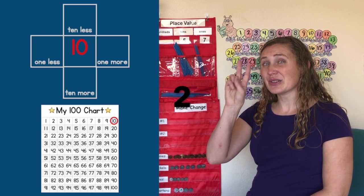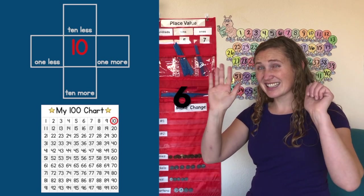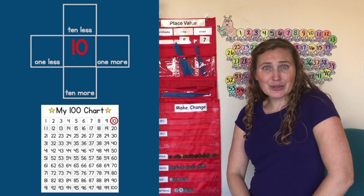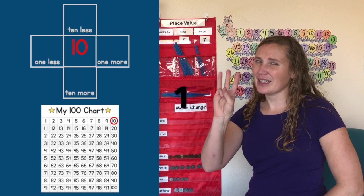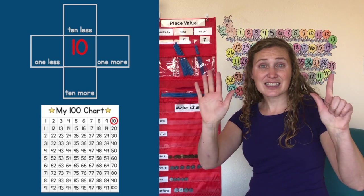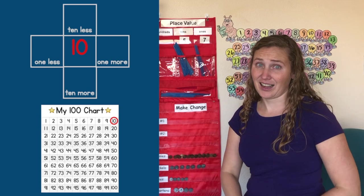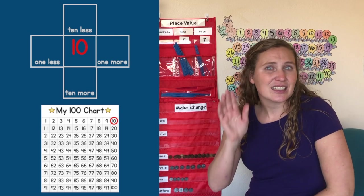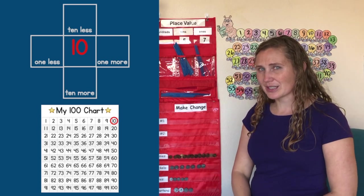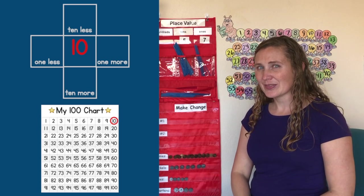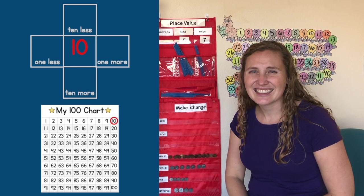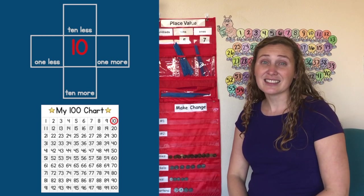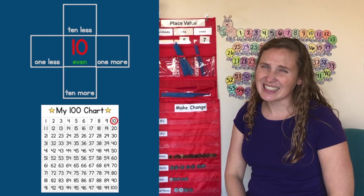So we think about 0 and that will tell us whether 10 is odd or even. Let's say our rhyme. 0, 2, 4, 6, 8. I love even numbers. They are great. 1, 3, 5, 7, 9. I like odd numbers all the time. Did you hear the number 0? I did. 0 is an even number. So 10 is also an even number.